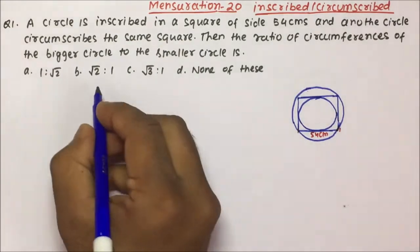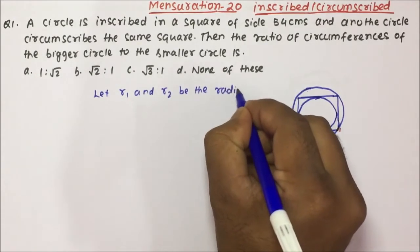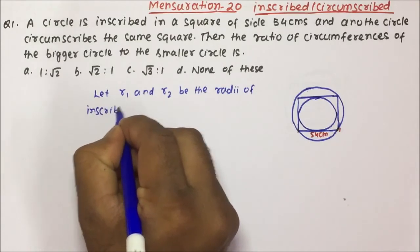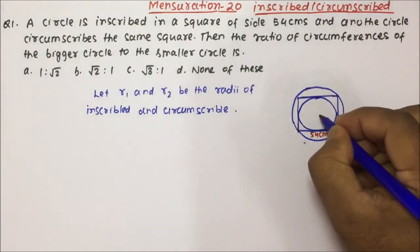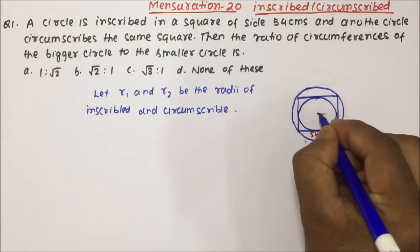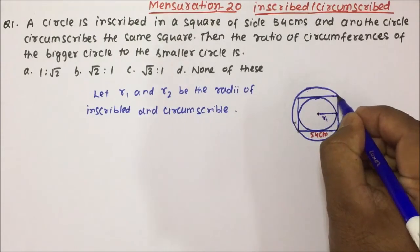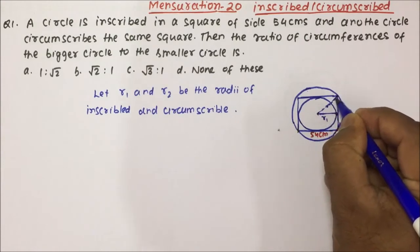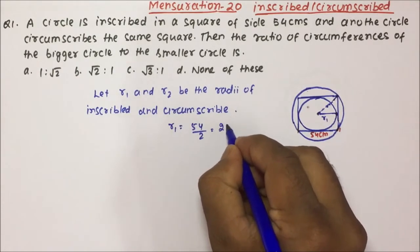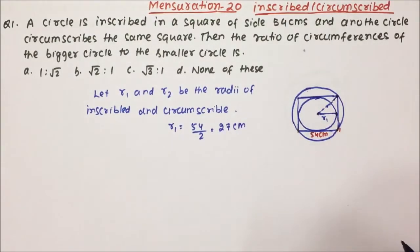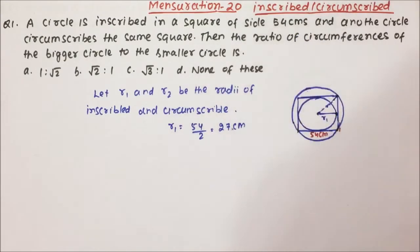Now, let R1 and R2 be the radii of the inscribed and circumscribed circles respectively. So this is our smaller circle with radius R1, and this is our bigger circle with radius R2. R1 will become 54 divided by 2, which is nothing but 27 cm, because the diameter of the inscribed circle equals the side of the square.